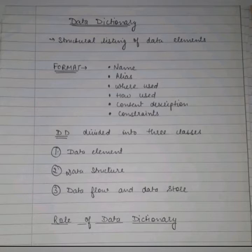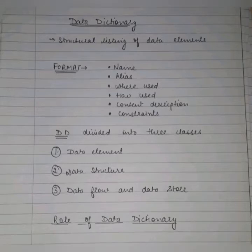The data dictionary has some items which are divided into three classes. Number one: data element. Number two: data structure. And number three: data flow and data store.